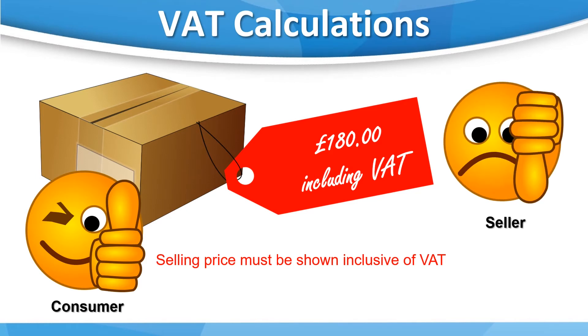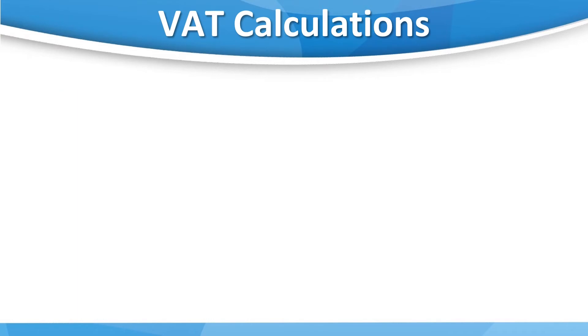VAT registered businesses will need to calculate the VAT from the gross amount. Let's look at an example. We'll use the same prices as we used before. The gross amount is the amount inclusive of VAT. Remember that we calculated the gross amount to be £180.